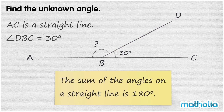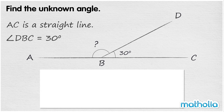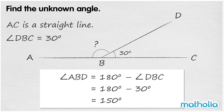Recall that the sum of the angles on a straight line is 180 degrees. So angle ABD is equal to 180 degrees minus angle DBC. We know DBC is 30 degrees. 180 degrees minus 30 degrees equals 150 degrees. So angle ABD is 150 degrees.